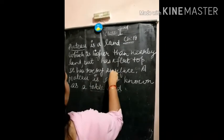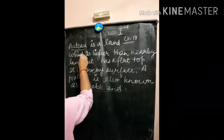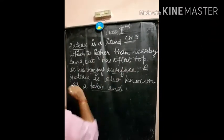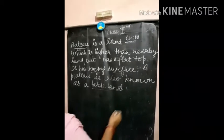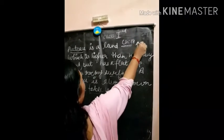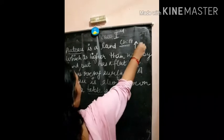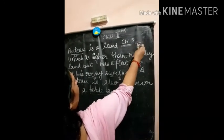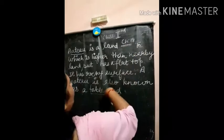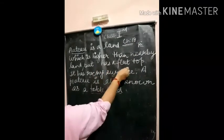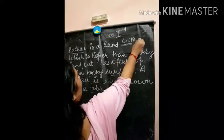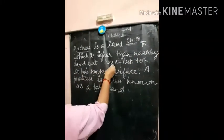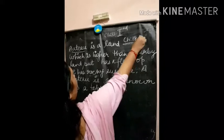It has a rocky surface and a plateau is a land which is higher than nearby land. It is much higher than the nearby land but its surface is flat — it has a flat top.